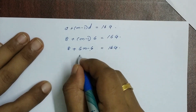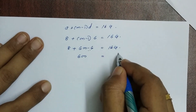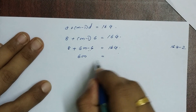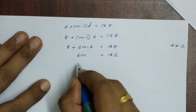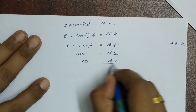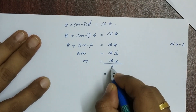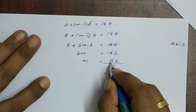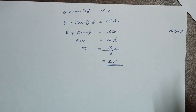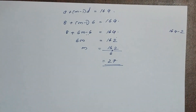So 6m + 2 = 164, therefore 6m = 162, and m = 162 ÷ 6 = 27. So m is equal to 27.